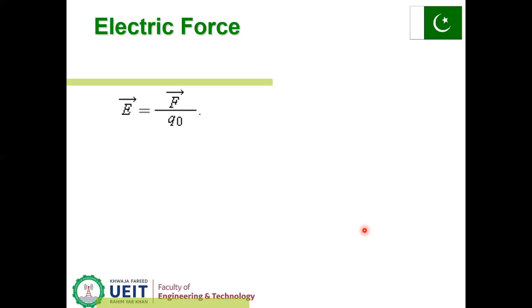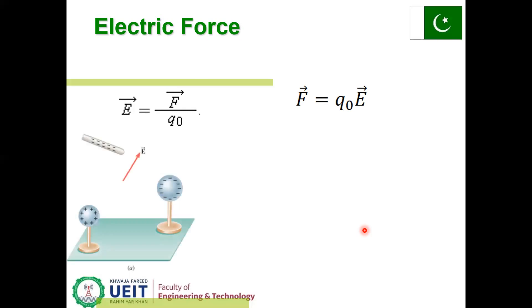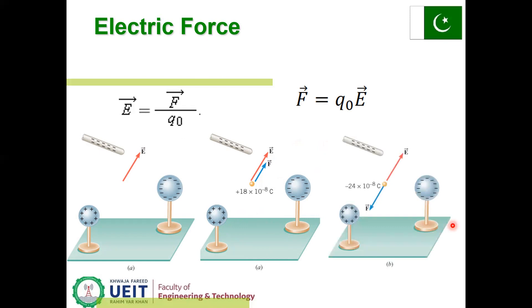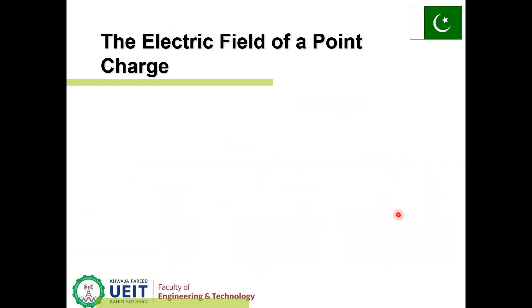What is electric force? Electric force is equal to Q₀ times E, where E is the electric intensity F over Q₀. Electric field is a vector. In figure B, the electric field vector and force vector are in the same direction. In another case shown in figure B, the electric field vector and force vector are in opposite directions.